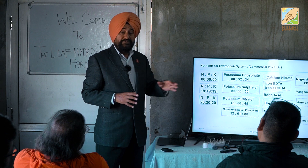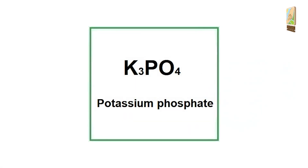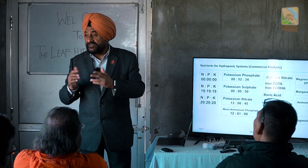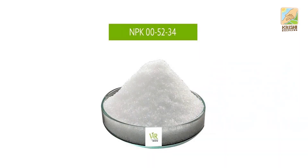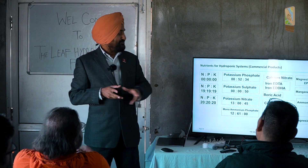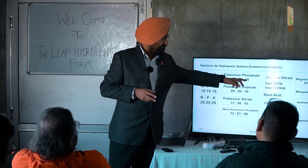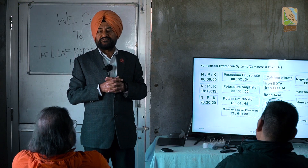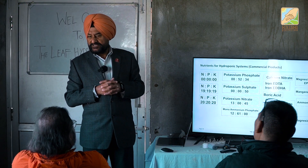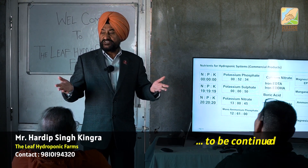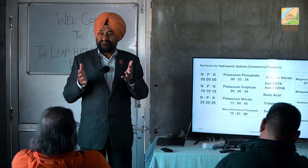When you go to potassium phosphate — if you go to the shop and say you need potassium phosphate — you should explain it as 0-52-34 broadly. Because potassium monophosphate has both potassium and phosphate. Then potassium sulfate — if you say give me potassium sulfate, that is potassium sulfate on its own. So 0-0-50 is nothing but potassium sulfate.